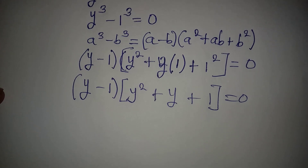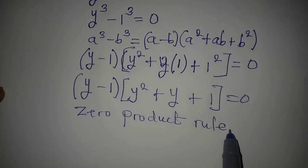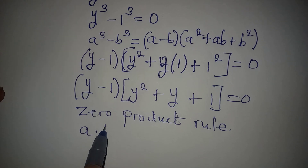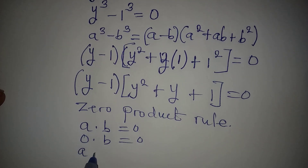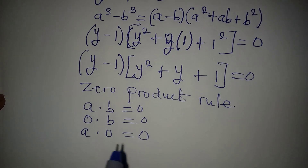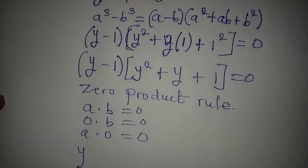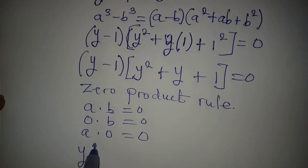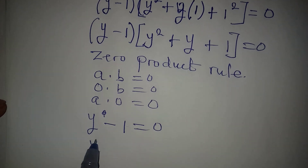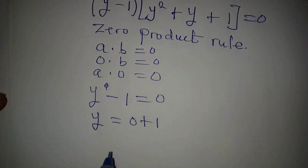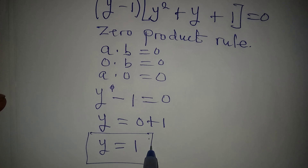From here we can apply the zero product rule. This rule says that if you have a multiplied by b equal to 0, then either a equals 0 or b equals 0. So either factor can equal 0. Working with the linear expression: y minus 1 equals 0, meaning y equals 0 plus 1, so y equals 1. This is the first value of y and it is a real solution.